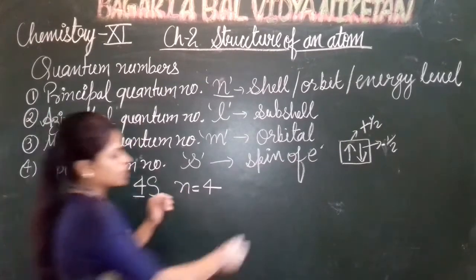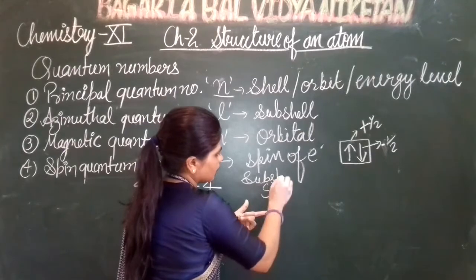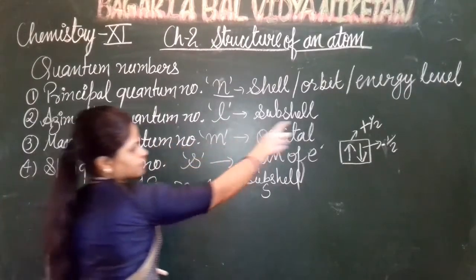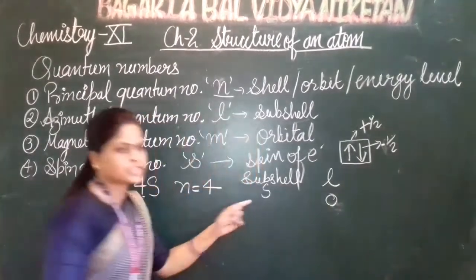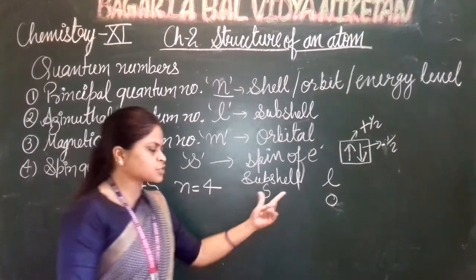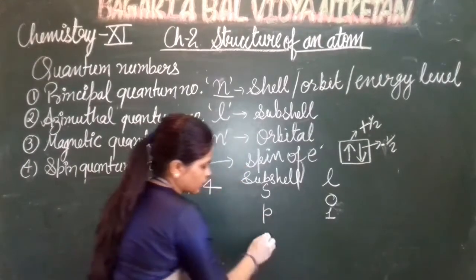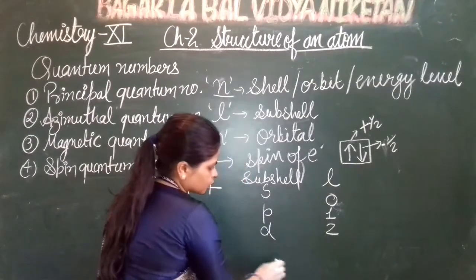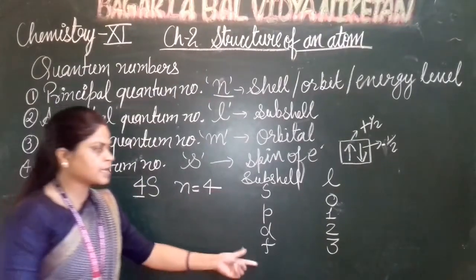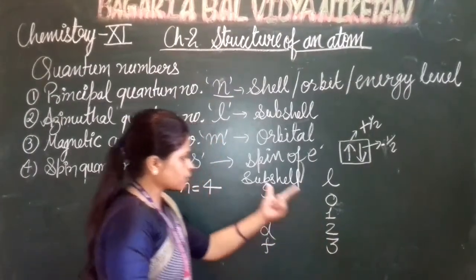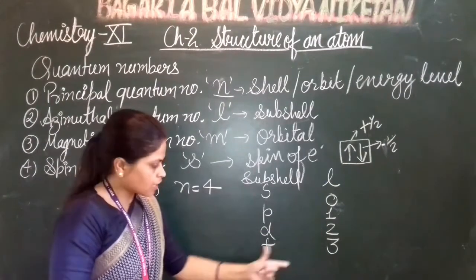Now for the azimuthal quantum number l: if the sub-shell is s, the value of l is 0. If the sub-shell is p, l equals 1. If it is d, l equals 2. And if it is f, l equals 3. These are the azimuthal quantum number values for s, p, d, and f sub-shells. You must learn these.